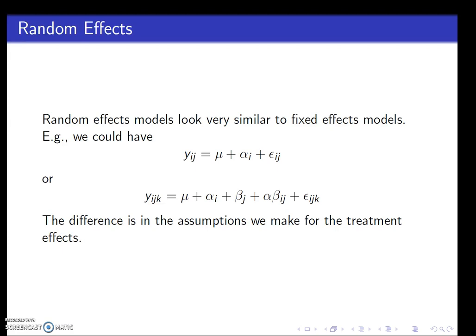Random effects models look very similar to fixed effects. In fact, when we write them out as a linear model, they look no different. So here's a one-way model - this could be fixed or random. Factorial model, fixed or random. The differences are in the assumptions we make about these effects, the alphas and the betas.